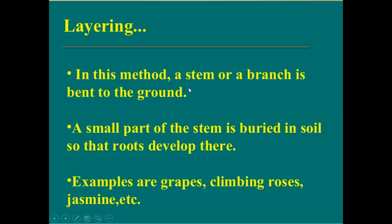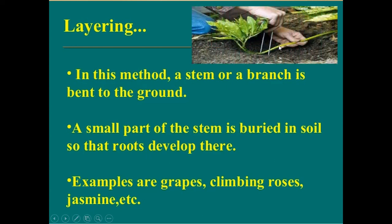The first method is layering. In this method, a stem or a branch is bent to the ground and a small part of the stem is buried in the soil so that roots can develop. Here you can see in the picture. This can be done in plants such as grapes, climbing roses and jasmine.